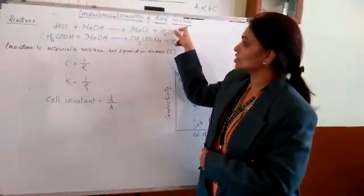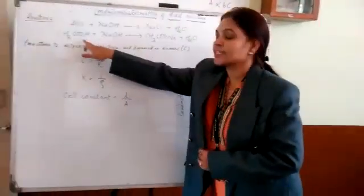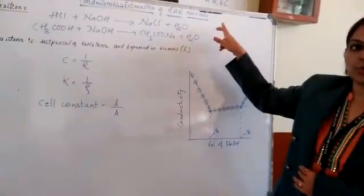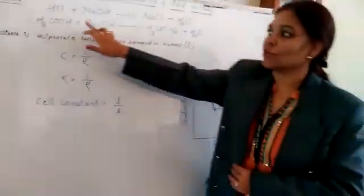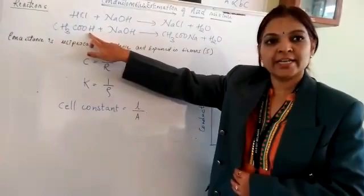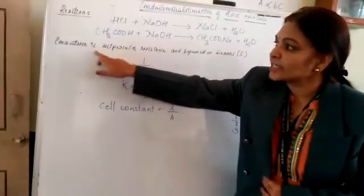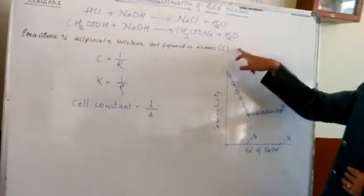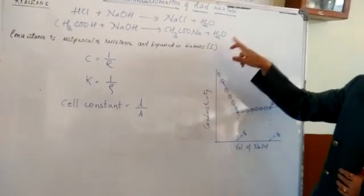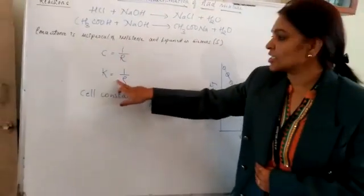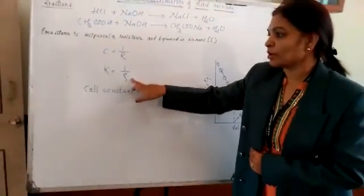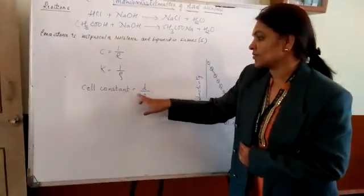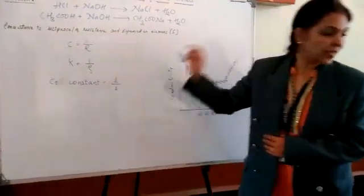The acid mixture contains HCl and acetic acid. By using the conductivity of the solution, you are determining the strength of HCl and acetic acid. Conductance is the reciprocal of resistance and is expressed in Siemens. Conductivity equals 1 divided by resistivity, and the cell constant is given by L upon A.